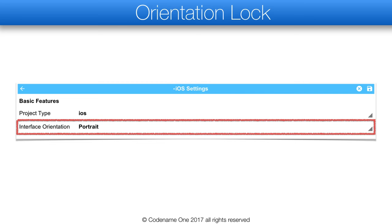As I mentioned before, locking the orientation in code isn't enough for iOS. In iOS, we need to define the orientation lock at the project level, which we can do in the Codename One settings iOS section.